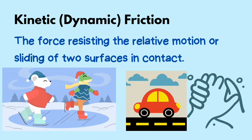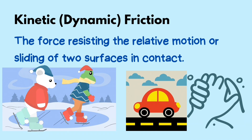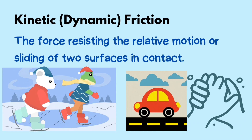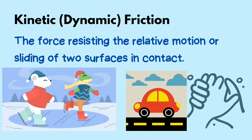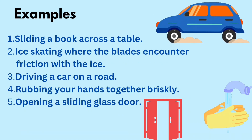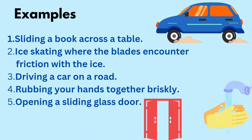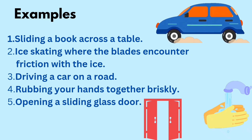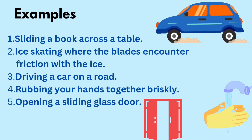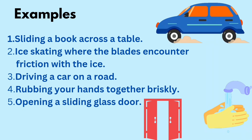Kinetic or dynamic friction is the force resisting the relative motion or sliding of two surfaces in contact. Examples: 1. Sliding a book across a table. 2. Ice skating, where the blades encounter friction with the ice. 3. Driving a car on a road. 4. Rubbing your hands together briskly. 5. Opening a sliding glass door.